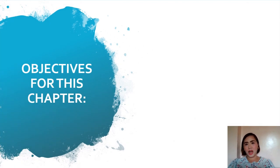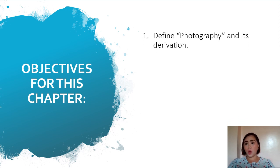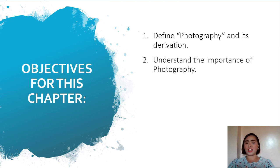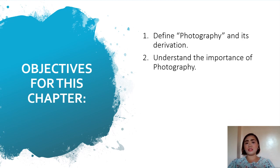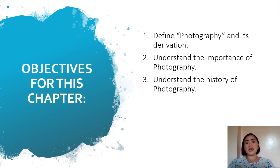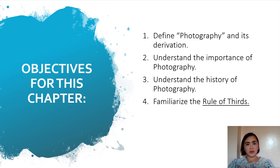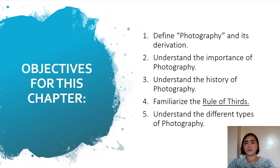Before we begin with our formal lecture, let us discuss the basic objectives for this chapter. By the end of this discussion, we are hoping to be able to define photography and its derivation. Our second objective, to understand the importances of photography. Our third objective, to understand the history of photography. The fourth objective, to familiarize the most basic rule when it comes to photography, and that is the rule of thirds. And our last objective, to understand the different types of photography.